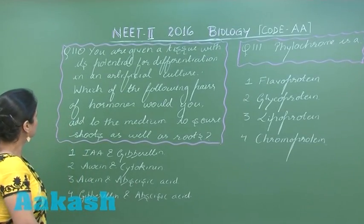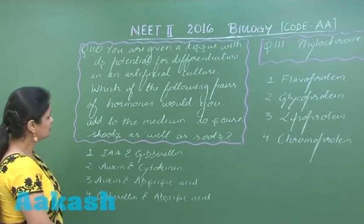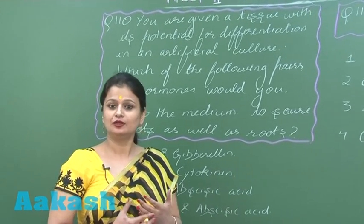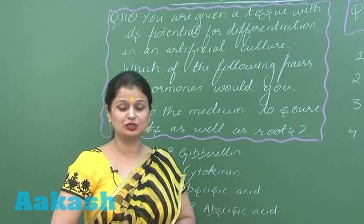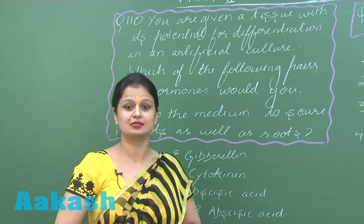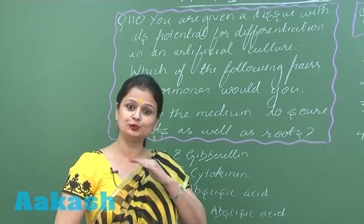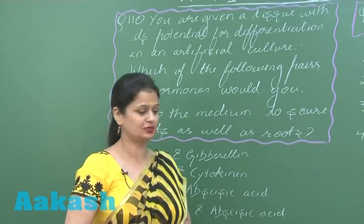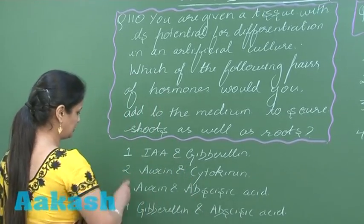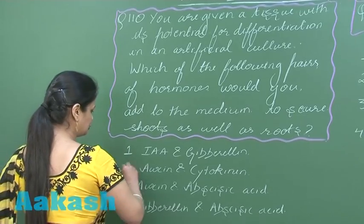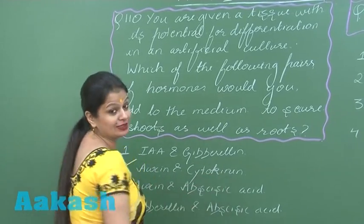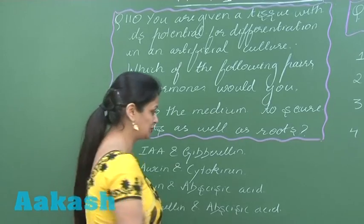Question 110 is with respect to tissue culture. In tissue culture, for the formation of the shoot the hormone which is utilized is cytokinin, and for root initiation auxin is used. So the right option for this question is option number 2: auxin for root initiation, cytokinin for shoot initiation.